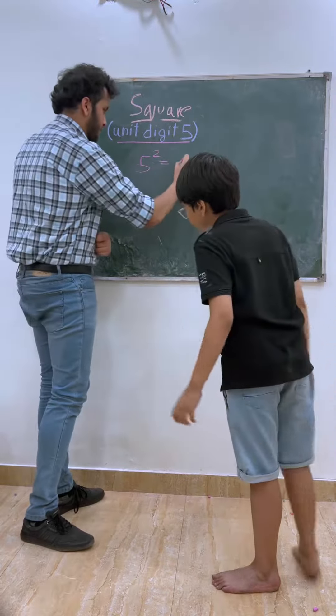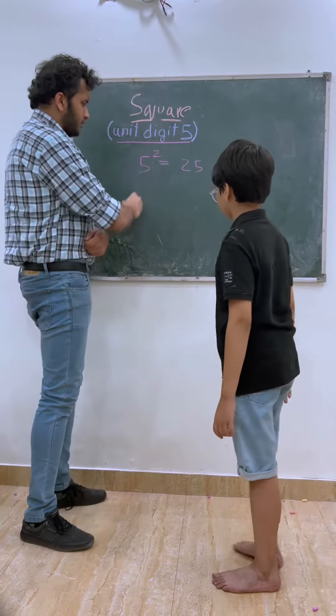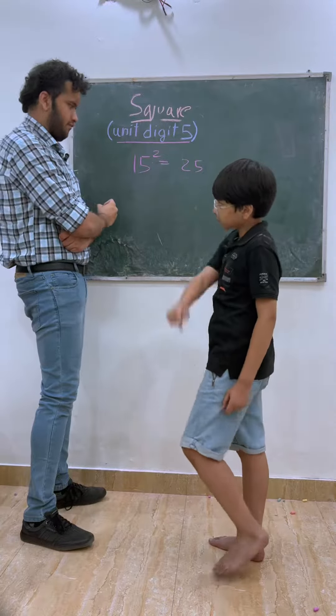Tell me, how much is 5 square? 25. Very good. Now, I'll give it 15 square. 225. Very good.